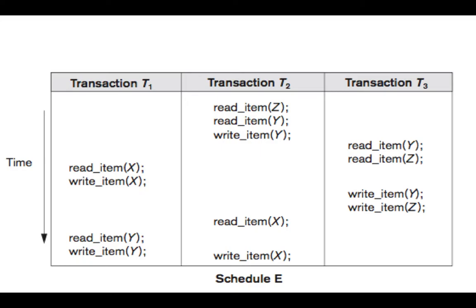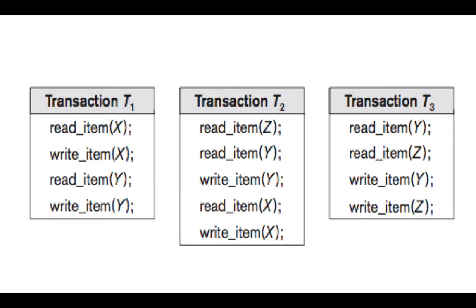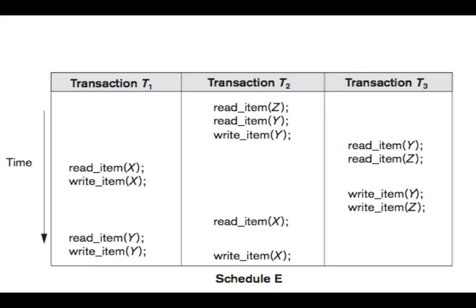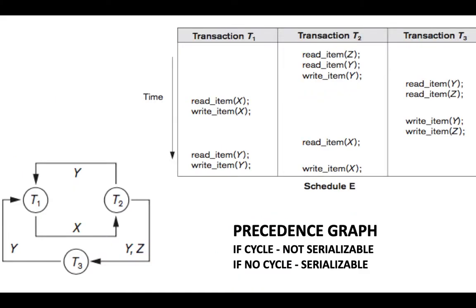A schedule is serializable if it gives the same result as a serial schedule — for example, if T1 occurs first, then T2, then T3. To check this, we use a graph-based procedure. This graph is termed the precedence graph. Since there are three transactions T1, T2, and T3, there will be three nodes in the graph.